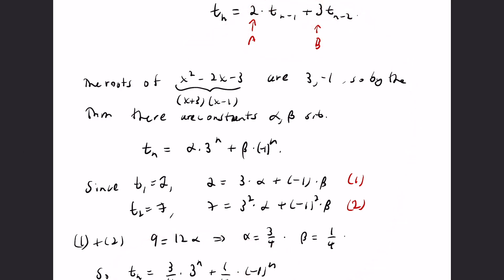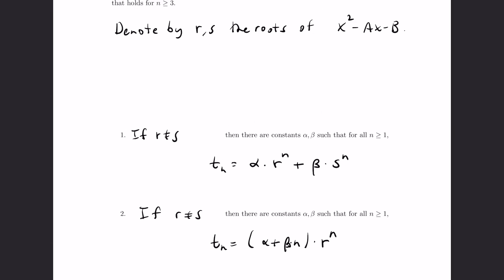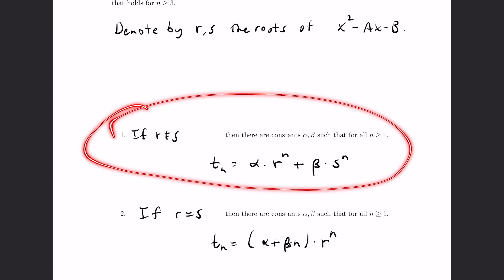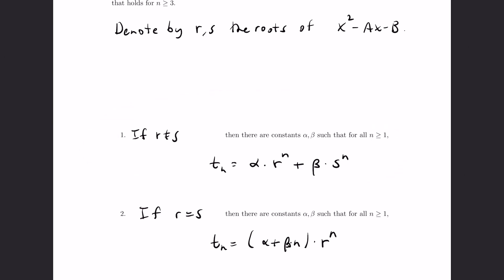Now we'll move on to the actual proof of this theorem. We're going to prove just the first part when the two roots are different. The proof when the two roots are the same, where r and s are equal, is actually very similar — that's something you can give a try. Try to see how we can adjust the proof for this first part to get the proof for the second part.